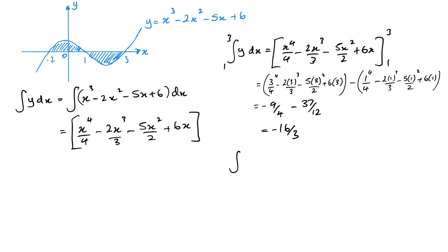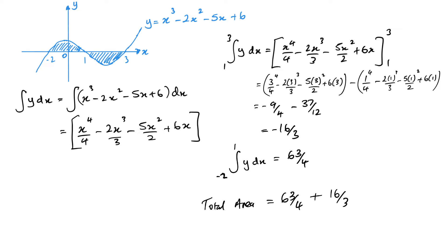Then I need to do it between 1 and minus 2. I won't substitute it all in again here — it's going to be the same process, so I'm just going to give the answer. And this will give me 63 over 4. So my total area is going to be 63 over 4 plus 16 over 3, because the area is a positive 16 over 3. And this gives me 253 over 12, or as a decimal, 21.083 recurring. I'll leave it to three decimal places.